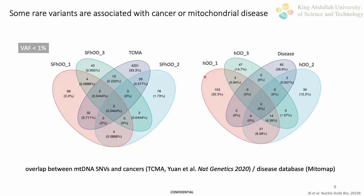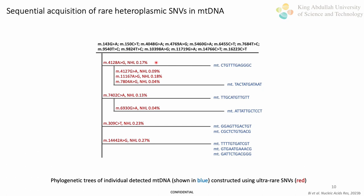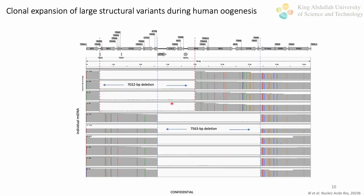Interestingly, many rare variants in oocytes overlap with the cancer mitochondrial atlas. One oocyte also harbors two causal mutations of mitochondrial diseases. This data suggests that rare disease-associated mutations commonly exist in healthy human oocytes. We also obtained variant linkage information from complete and haplotype-resolved mtDNA sequences. It shows, for the first time, evidence for sequential acquisition of mutations in mtDNA. IMIC-seq uncovered several cases of clonal expansions of mutant mtDNA harboring the same large deletions.